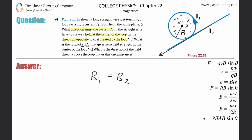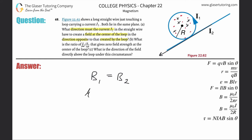We have two formulas for magnetic field strength based on the shape of the current. For the straight wire: B = μ₀I₂ / (2πR). For the loop: B = μ₀I₁ / (2R). Setting them equal, the permeability of free space μ₀ appears in both. The distance R for the straight wire formula is the distance from the wire to the point of interest — the center of the loop.